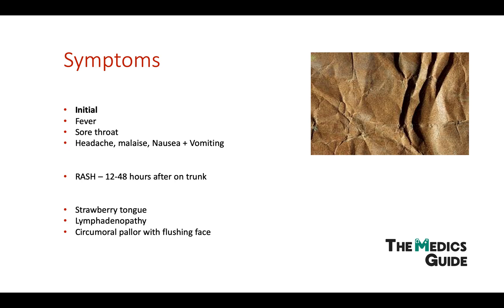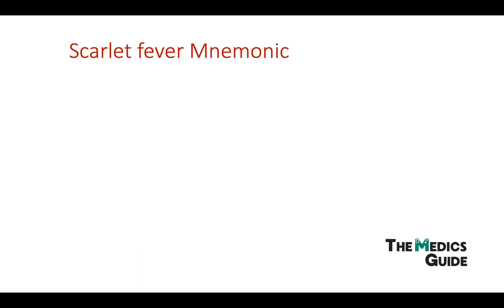This is just flushing. Lastly, you can get enlarged tonsils and some abdominal pain. So there's quite a lot to remember. Like always, I've come up with a mnemonic to try and help you remember — this one's quite easy. It's just SCARLET, and each letter represents a different thing.